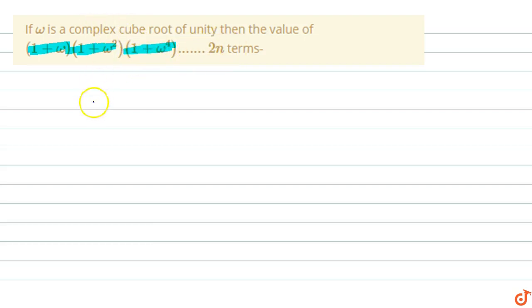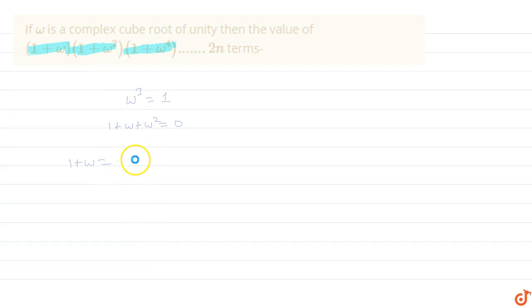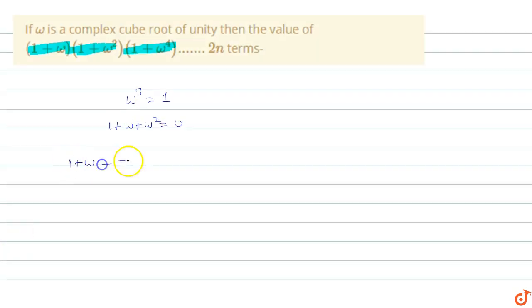Since omega is a cube root of unity, omega cubed equals 1, and 1 plus omega plus omega squared equals 0. Therefore, 1 plus omega equals negative omega squared, and 1 plus omega squared equals negative omega.